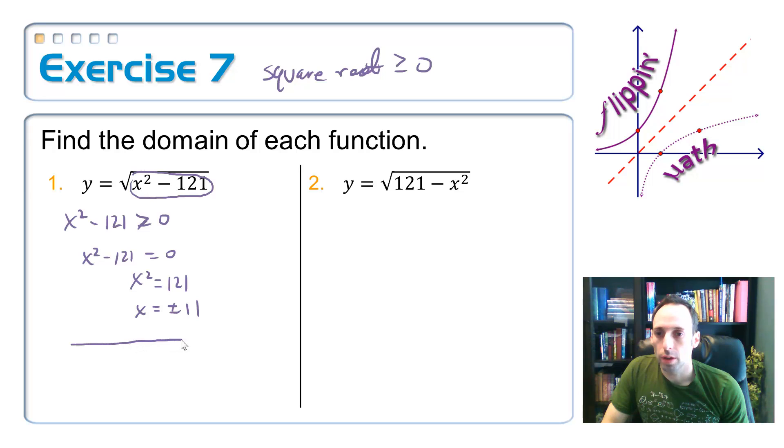Now let's put it on a number line. Right there. Got zero. Got 11. Got a negative 11. These do get colored in because it's equal to. And then let's do a test value. Is zero going to make this true? If I plug zero in here, I get zero squared minus 121 is negative 121. That would be imaginary. So it must be on the outside of this.